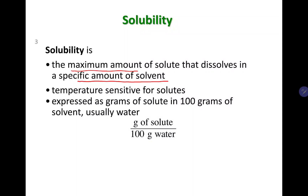Solubility is temperature sensitive — by increasing or decreasing the temperature, you can alter the solubility. So whenever you define solubility, you have to identify the temperature. Solubility is also expressed as grams of solute in 100 grams of solvent — usually 100 grams of water, since water is the most common solvent. Sometimes you may see it defined as grams of solute divided by 100 grams of water.